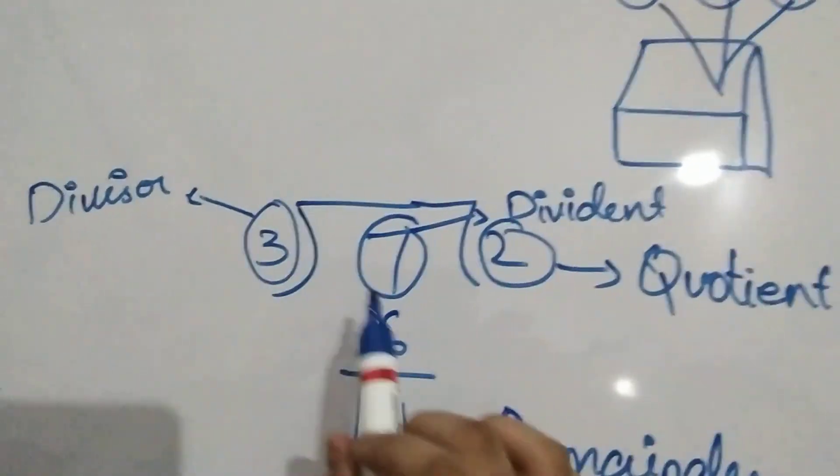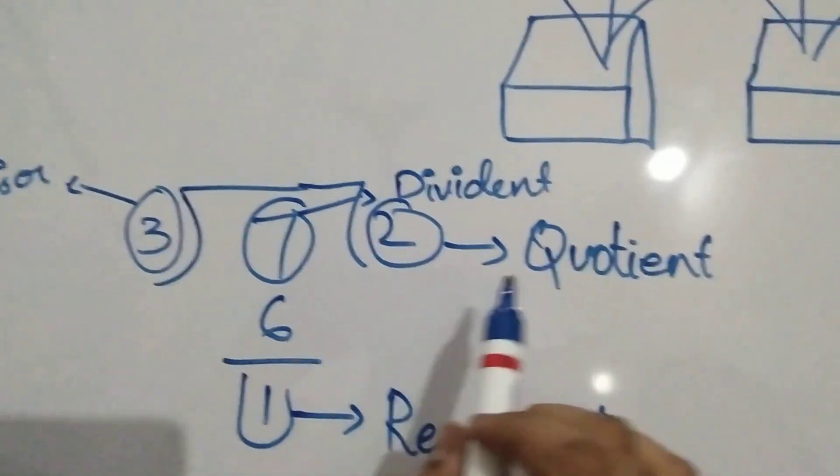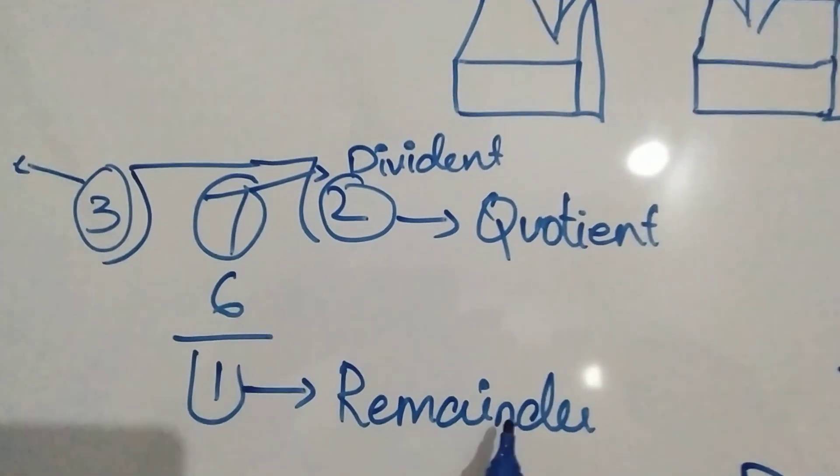3 is the divisor, 7 is the dividend, 2 is the quotient and 1 is the remainder.